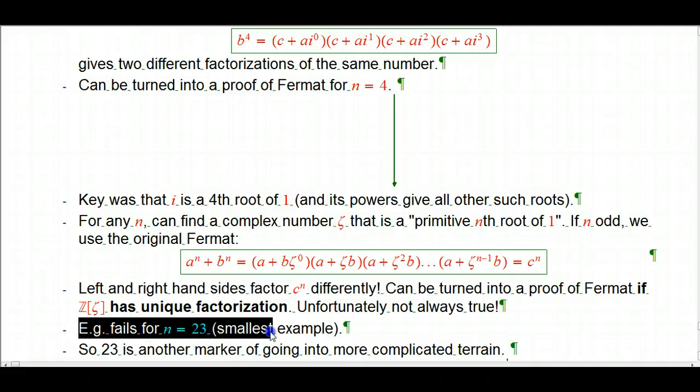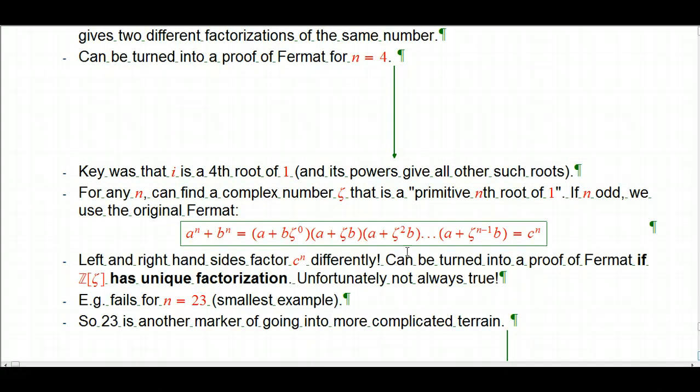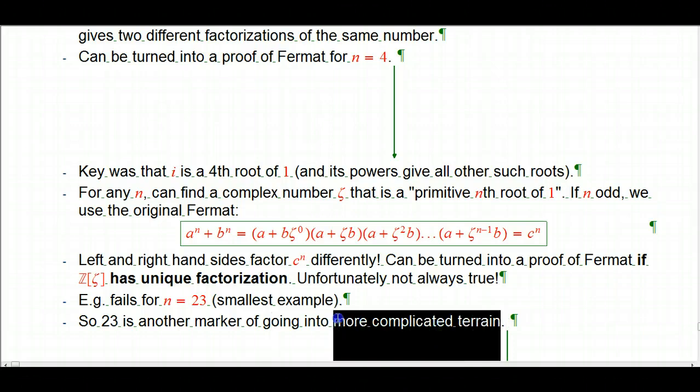And in fact, this is why I picked out 23 as a particularly interesting number. Another one where if you ask a number theorist, what's special about 23? They're pretty likely to say that's the smallest n for which this kind of ring, this kind of algebraic structure, Z adjoined a 23rd root of unity, does not have unique factorization. These are called cyclotomic, well, they're part of the theory of cyclotomic fields. Again, there's a bit of an issue, similar to the issue I started this video with. So 23 is another marker, I'd say, of going into more complicated terrain.